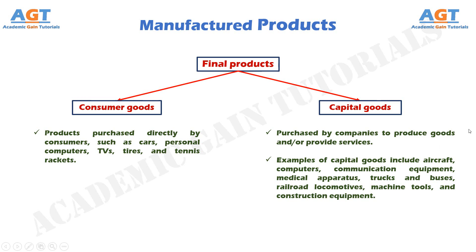In addition to final products, other manufactured items include the materials, components, tools, and supplies used by the companies that make the final products. Examples include sheet steel, bar stock, metal stampings, machine parts, plastic moldings and extrusions, cutting tools, dies, molds, and lubricants. Thus, the manufacturing industries consist of a complex infrastructure with various categories and layers of intermediate suppliers with whom the final consumer never deals.